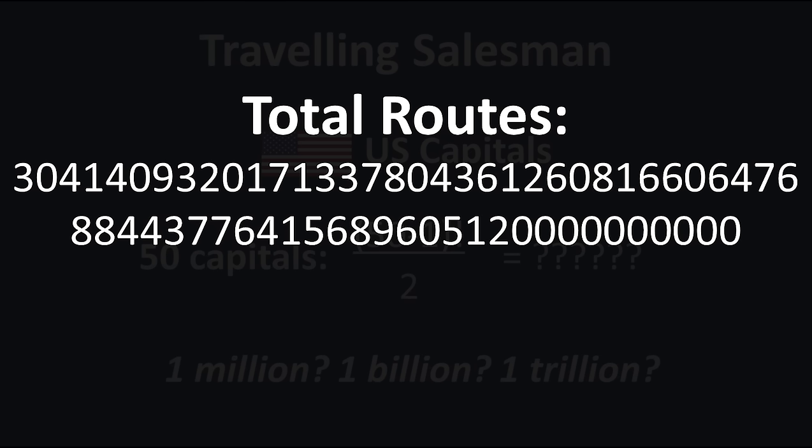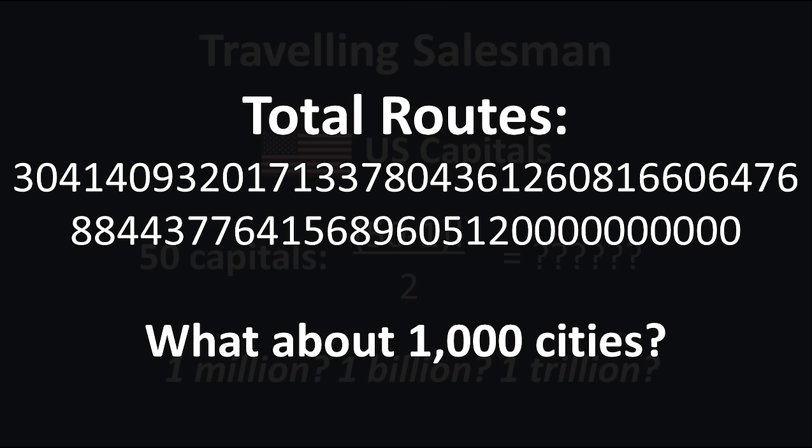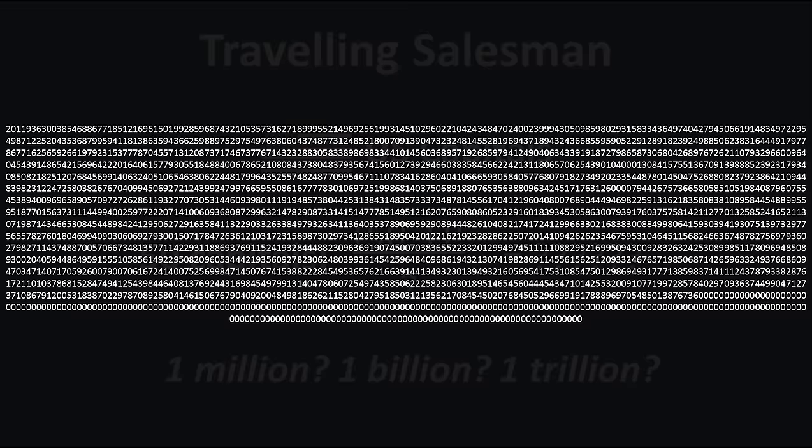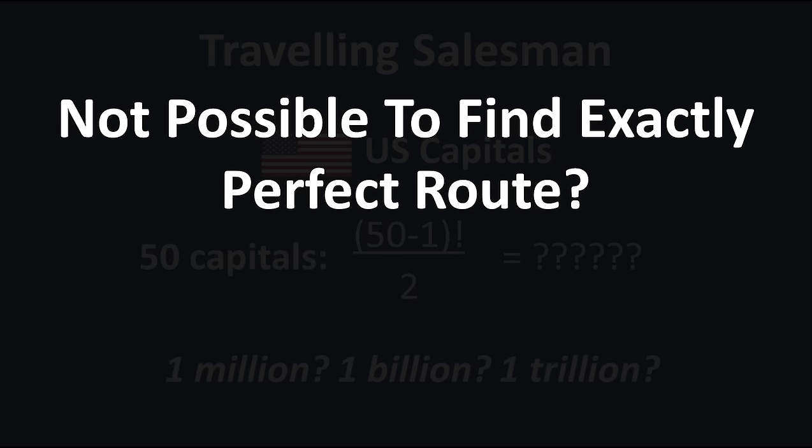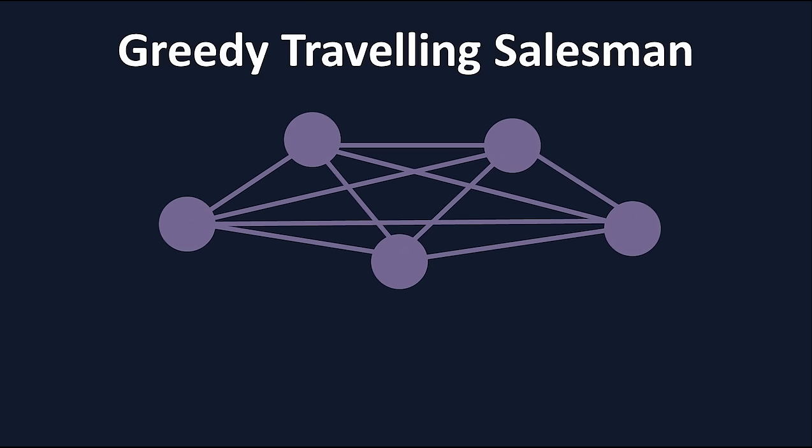As you can see, we definitely won't be finding the exact optimal route from every possible route. Here's where our friend the greedy algorithm comes in. Let's choose an arbitrary starting city and write a simple algorithm that always chooses the next city that's the least far away. We can continue this process until we reach the end and then return to our starting city.